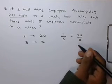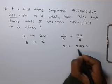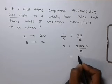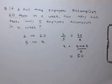So the value of x will be 20 times 5 divided by 2. So the value of x equals 50. So 5 employees can accomplish 50 tasks.